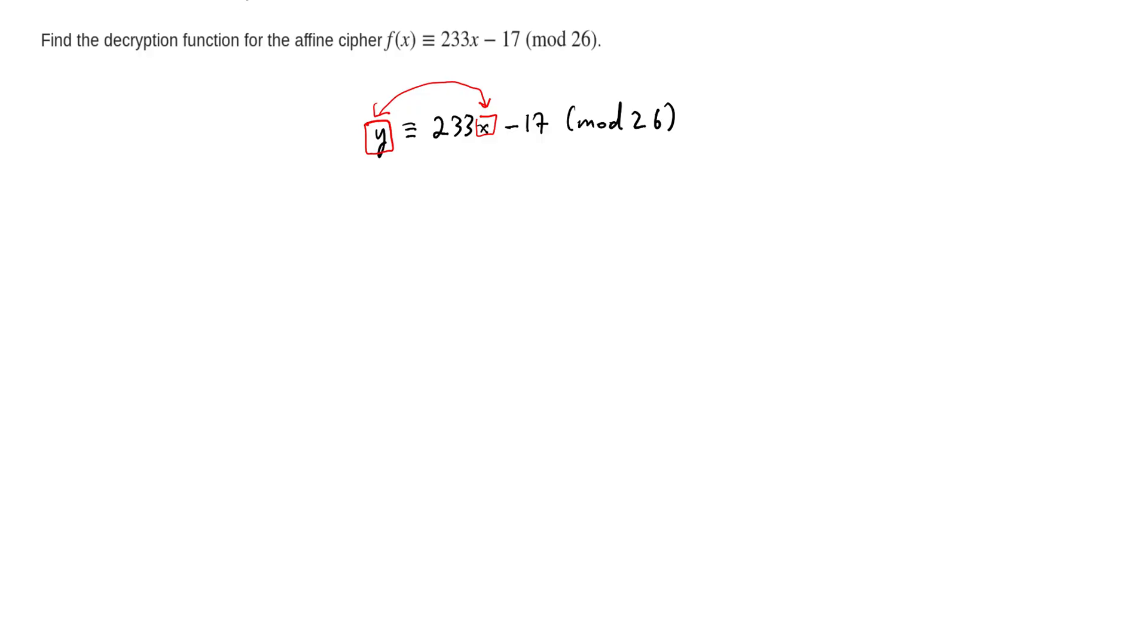So if we switch these roles, then what we end up with is our new equation, our congruence here. It says that x is congruent to 233y minus 17 mod 26.